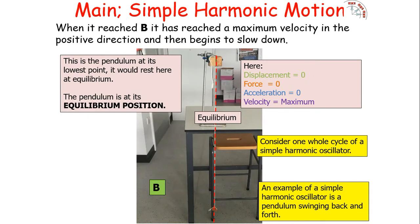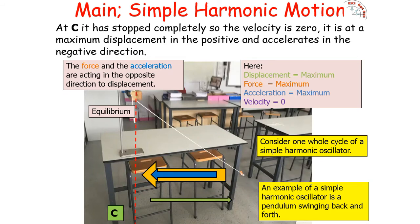Once we get to point B — the equilibrium position — if there were no motion, your oscillator would rest here. At this point, displacement is zero, force is zero (since force and displacement are directly proportional), and acceleration is also zero. But the velocity is at its maximum for that part of the journey. At point C, again we have maximum displacement, maximum force, maximum acceleration, and at that instantaneous point the velocity is zero because we've reached maximum displacement.